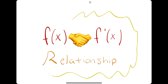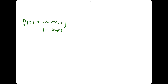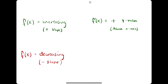F of x to f prime relationship. When the original function f of x is increasing or has a positive slope, f prime of x, its derivative, will have a positive y value — on a graph, it'll be above the x-axis. When f of x is decreasing or has a negative slope, f prime of x will have negative y values, or on a graph, it'll be below the x-axis.